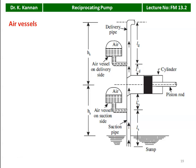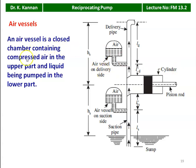In the single acting reciprocating pump, if we want a continuous supply of water in the delivery pipe, we install air vessels on the delivery side and the suction side. When you install the air vessel, the water will be delivered continuously. An air vessel is a closed chamber containing compressed air in the upper part and liquid being pumped in the lower part.